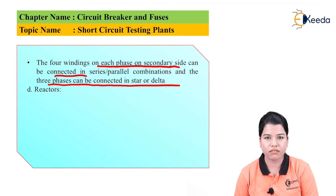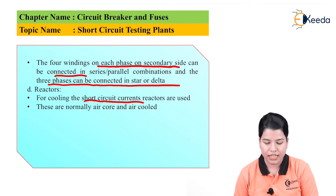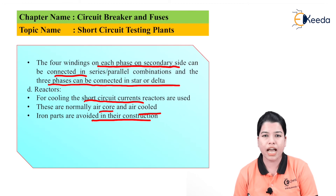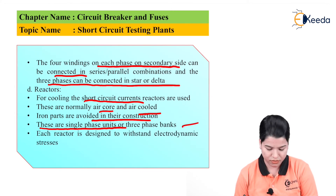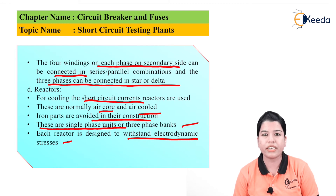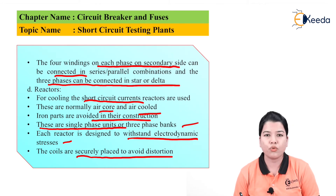Reactors are used for controlling the short circuit currents. They can be air-core or air-cooled type; iron parts are avoided in their construction. They are single-phase units or three-phase banks, and each reactor is designed to withstand electrodynamic stress. The coils are securely placed to avoid distortion.